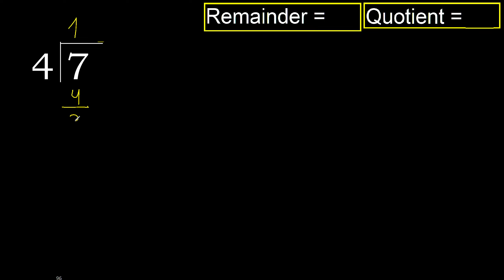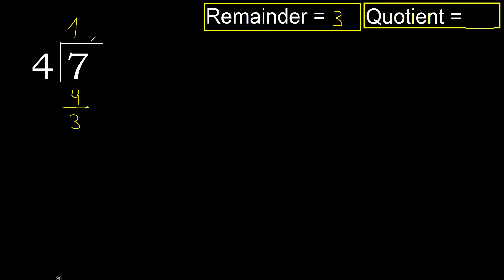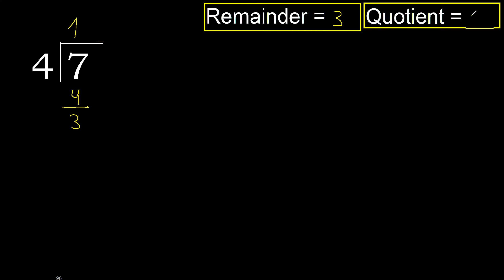Subtract: 7 minus 4 is 3. Therefore, finish it — the quotient is 1 and the remainder is 3.